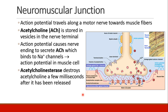Now is a good time for us to review the neuromuscular junction, which we will discuss in more detail in the pharmacology curriculum. At the neuromuscular junction, the action potential travels along a motor nerve towards a muscle fiber, until it gets to the nerve terminal. At the nerve terminal, we see little vesicles, and they contain acetylcholine, which is a neurotransmitter.